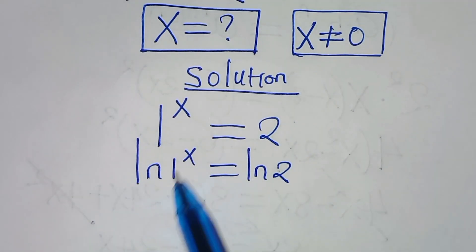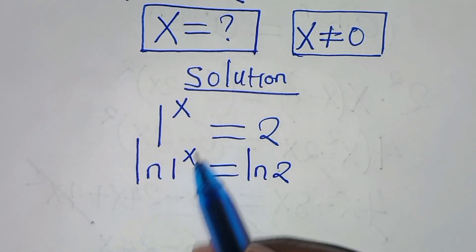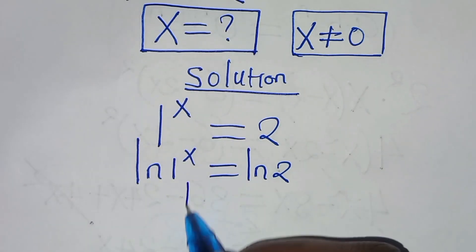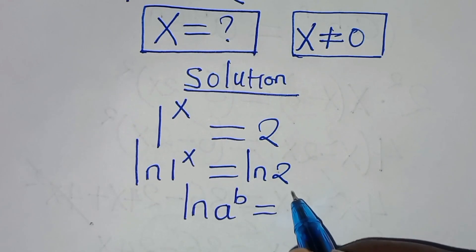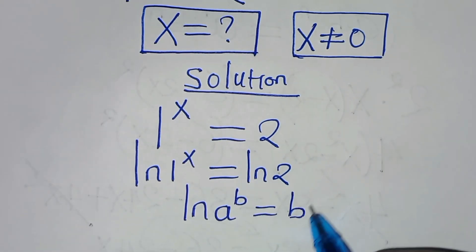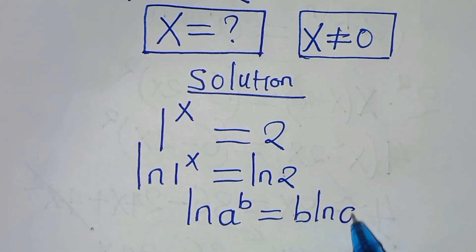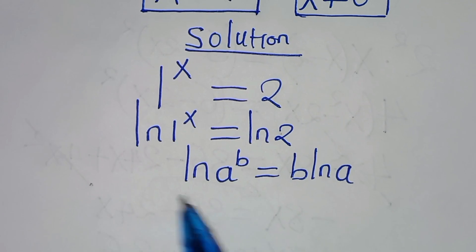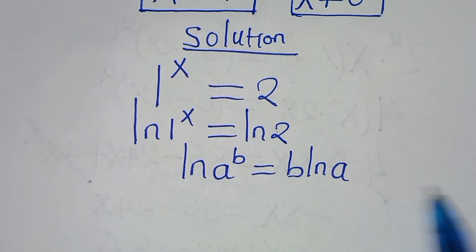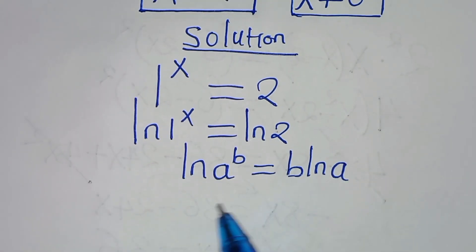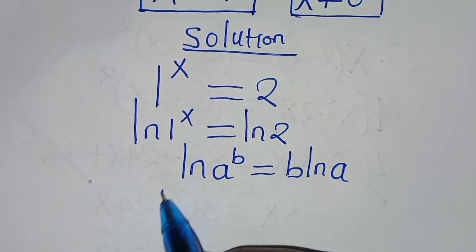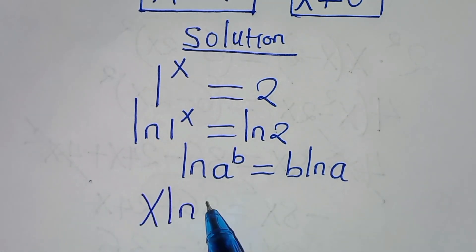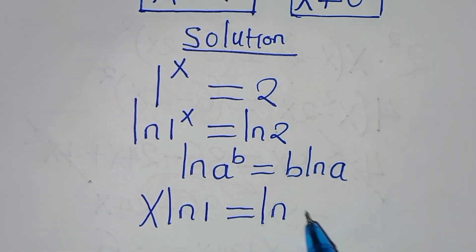Remember that ln of 1 to the power of x is in the form of ln of a to the power of b, which can be expressed as b·ln(a). Applying this power property of logarithm, then we have that ln of 1 to the power of x becomes x·ln(1), this is equal to ln(2).